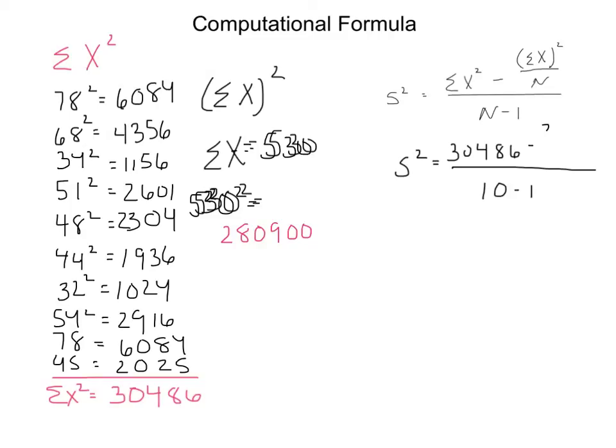I'm going to subtract 280900 all over 10. Then when I go through and plug this in my calculator, I'm going to start by doing the numerator. I'll divide 280900 by 10, and then subtract that from 30486. That will get me 2396, all divided by 9, because 10 minus 1 is 9.